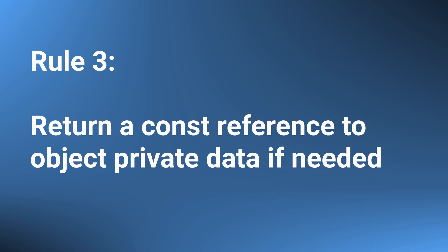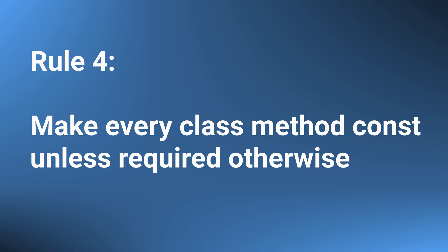Furthermore, this function is not supposed to change the underlying object in any way, and we have a mechanism to indicate this to the compiler. We mark the whole function const, which allows us to formulate rules 3 and 4 of const correctness. Rule 3: prefer returning a const reference to the private data of complex types, if you need to expose them to the user of your class. Return a copy for simple types instead. Only return a non-const reference if your class implements a data-agnostic container, something like std::vector. Rule 4: mark every class method as const unless it is explicitly supposed to change the underlying object. Prefer const methods when designing a class.